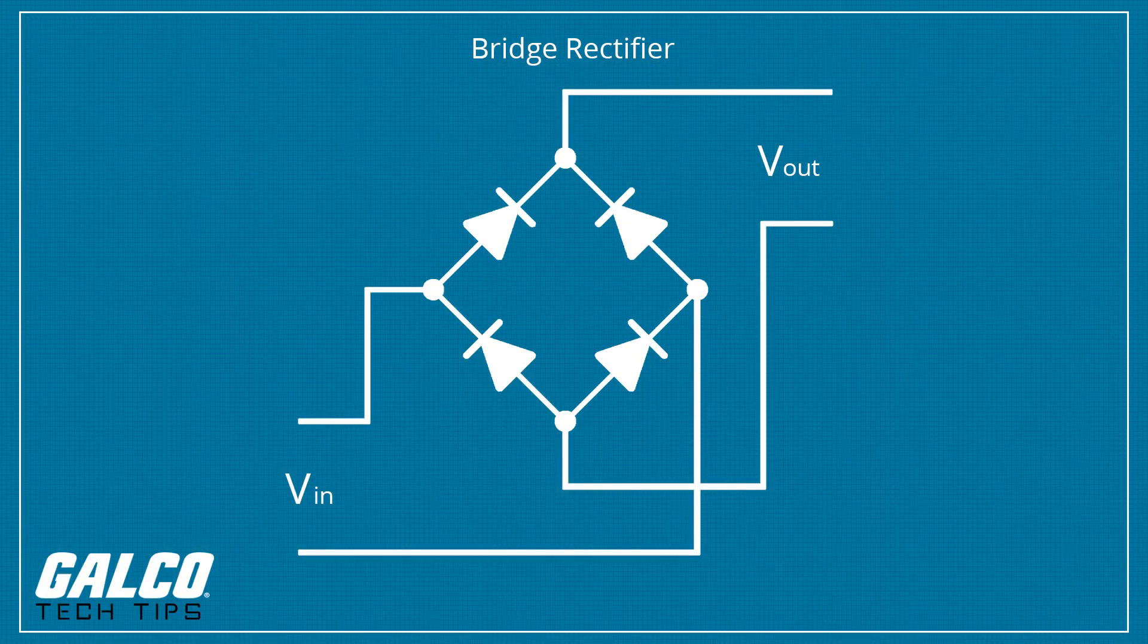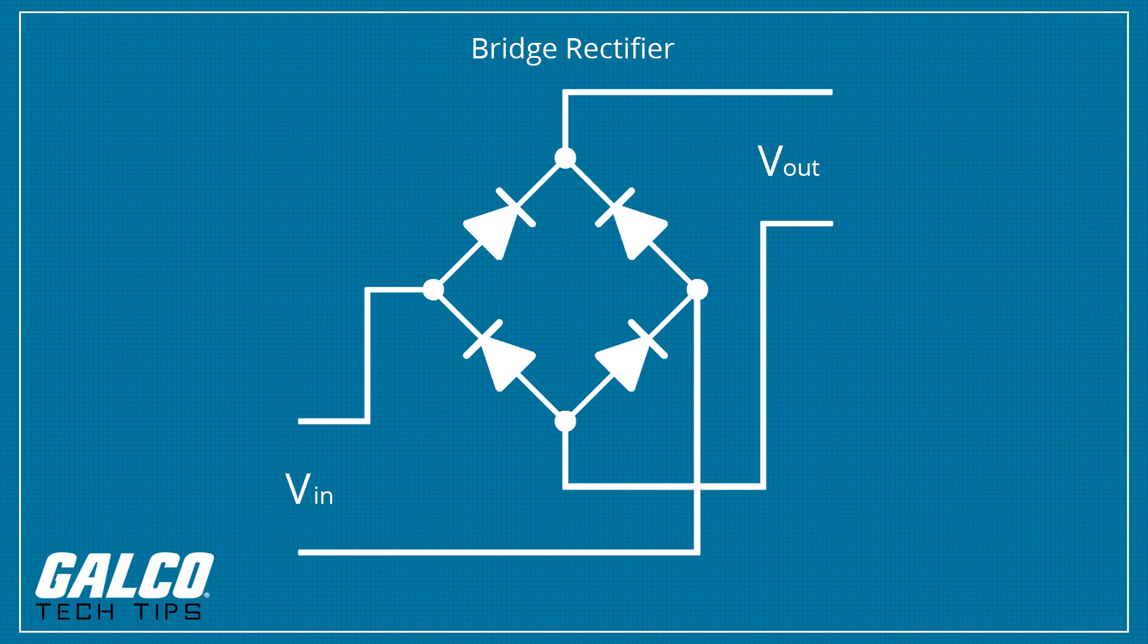Bridge rectifiers are a type of full wave rectifier with two output terminals and two or more input terminals depending on the type of signal being rectified.